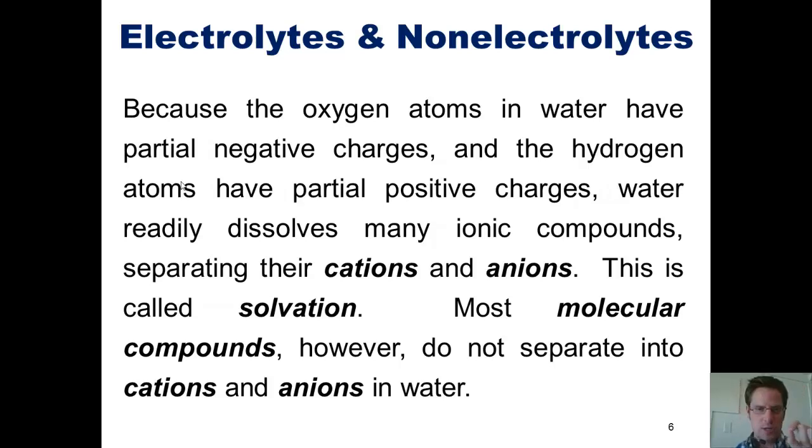Now, because oxygen atoms in water have partial negative charges, and the hydrogen atoms in water have partial positive charges, water readily dissolves many ionic compounds by separating out the cations and the anions. I explain that by saying the cations, those are things that have partial positive charges, are dissolved by water because the partially negatively charged oxygens tend to stick to the cations and bring them into solution. In contrast, anions, things that have negative charges, are able to dissolve in water because the partially positively charged hydrogens in water cluster around those anions and bring them into solution. This whole process is called solvation.